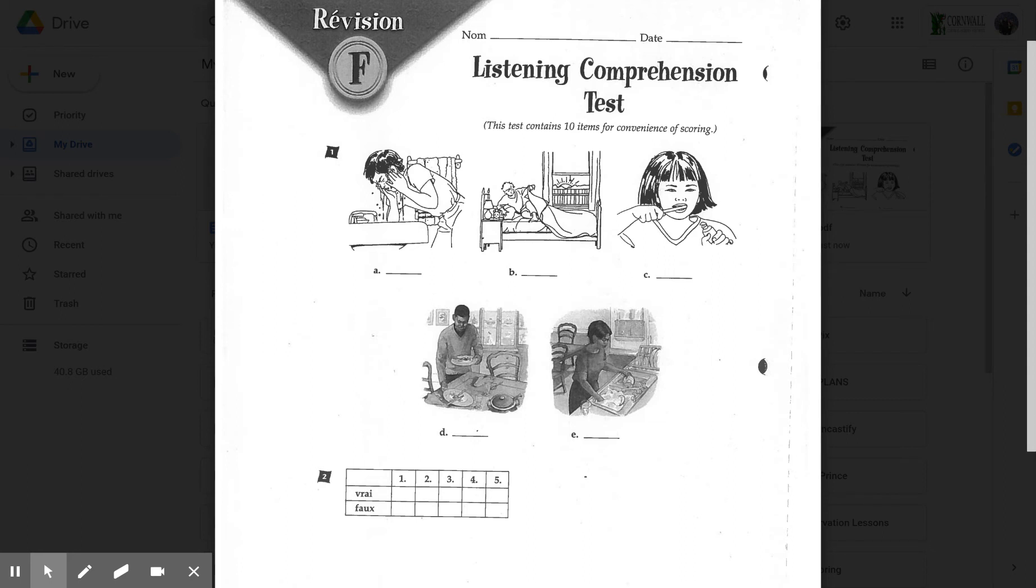All right, in part two, you see a grid for vrai ou faux. That means true or false. You're going to hear five more sentences. For each one, you're going to check off whether the sentence makes sense or it doesn't make sense. In other words, is it true or is it false? Does it make sense or no? If you find yourself saying, hey, you know what, that doesn't make sense, chances are then it's false. That would be faux. Here we go. Number one.